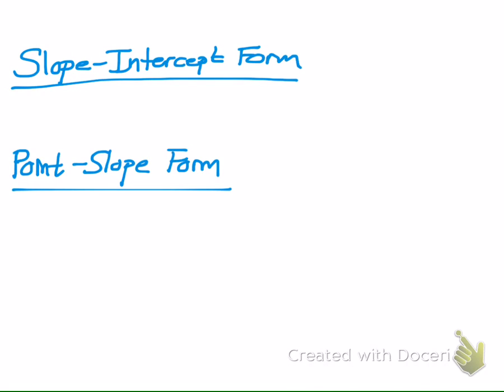The main two things we're talking about today are slope-intercept form and point-slope form — these are equations for how you write lines. Who remembers what slope-intercept form is? y equals mx plus b. You need two things to write an equation in slope-intercept form: the slope, which is m, and b, which is the y-intercept.